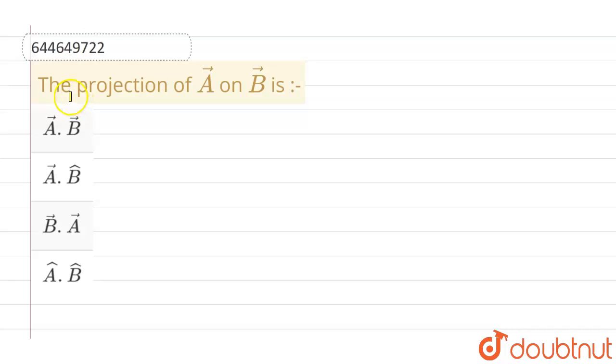Hello everyone. If we talk about this question, the given question is the projection of A vector on B vector is, and the given options are: A vector dot B vector, A vector dot B cap, third option is B vector dot A vector, and fourth option is A cap dot B cap. Now, what exactly we mean by projection of A vector on B vector.